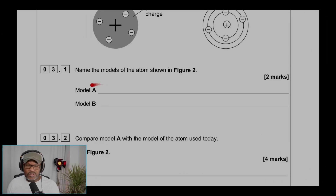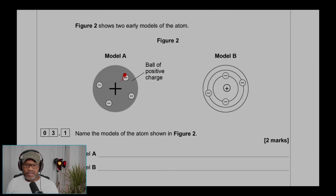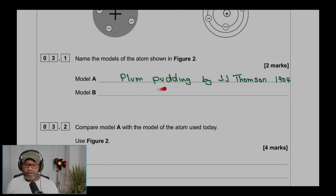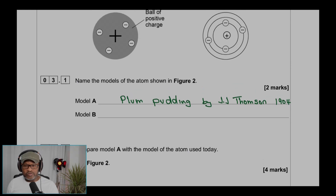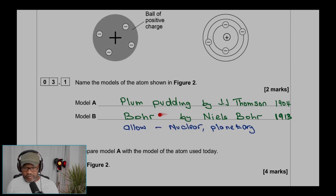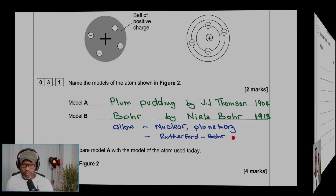Question 3.1: Name the models of the atom shown in Figure 2. Model A is the plum pudding model by J.J. Thompson in 1904. Model B is the Bohr model by Niels Bohr in 1913. Sometimes it's referred to as the nuclear or planetary model, or the Rutherford and Bohr model.